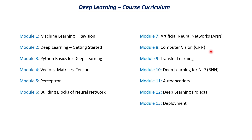The eighth module is completely on computer vision. We will learn about CNNs — how convolutional neural networks work and how we can use them for different computer vision applications. This module could be a standalone course on its own, so it will be very vast compared to the other modules, but we will learn a lot in it.